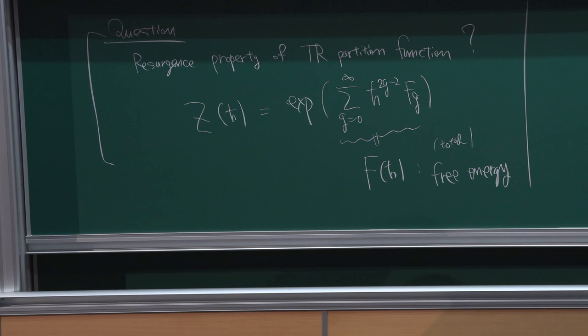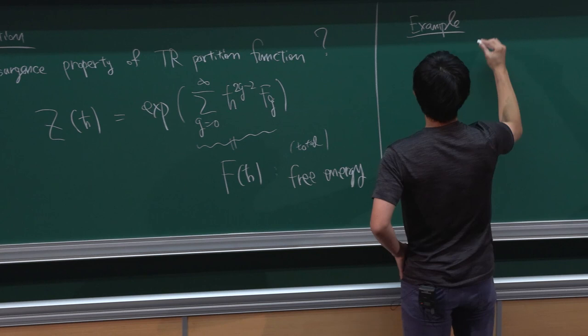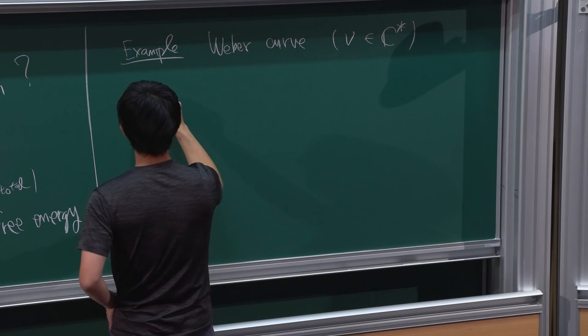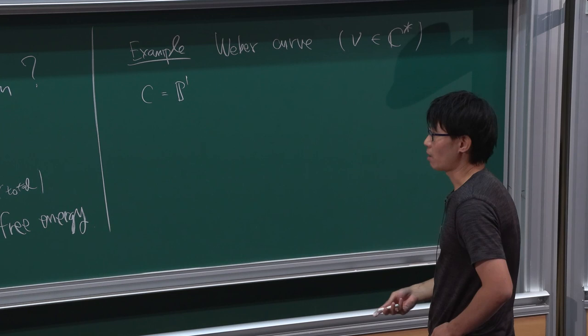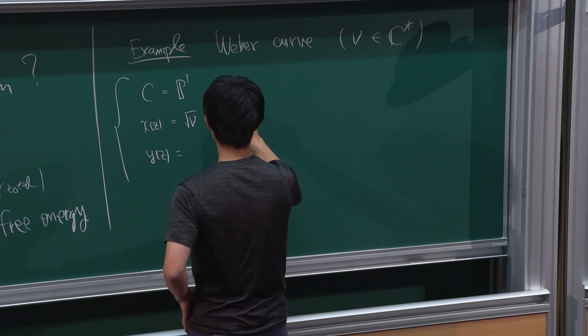Let me first give you some explicit example which we can analyze for resurgence properties explicitly. I call it the Weber spectral curve. It contains some parameter nu, a nonzero complex constant. The underlying Riemann surface is genus 0, and our pair of meromorphic functions — rational functions in this case — are given by X = z + z^{-1} and Y = z - z^{-1}, where z is the coordinate.